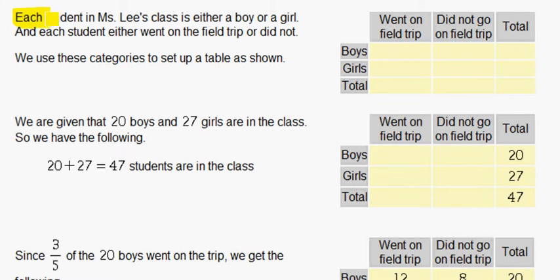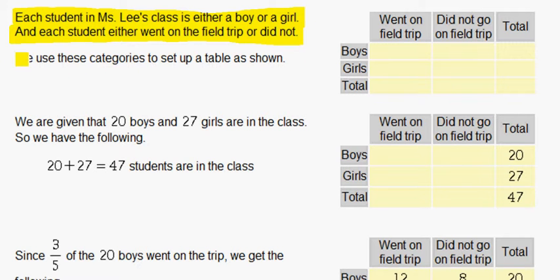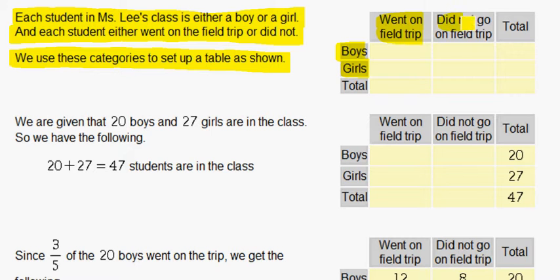Each student in Ms. Lee's class is either a boy or a girl, and each student either went on the field trip or did not. We use these categories to set up a table as shown. We have boys, girls, and went on the field trip or did not go on the field trip. Then we have totals.